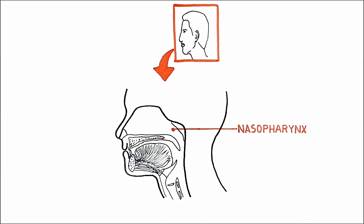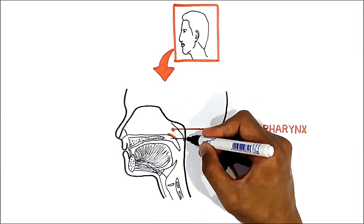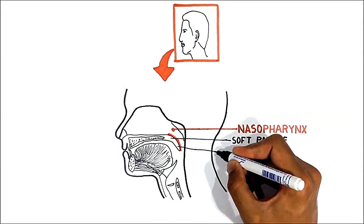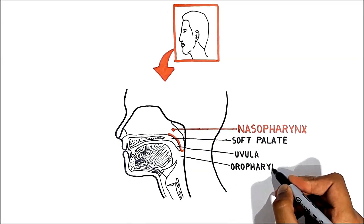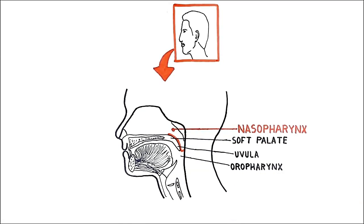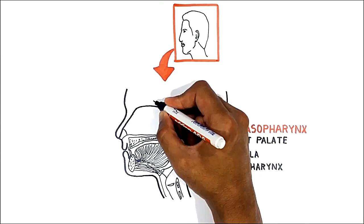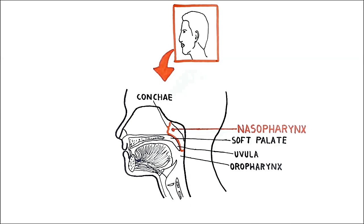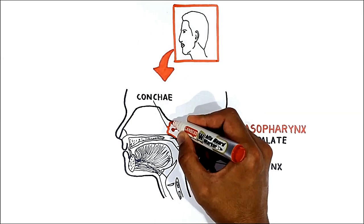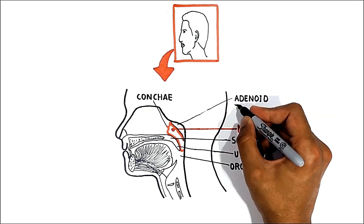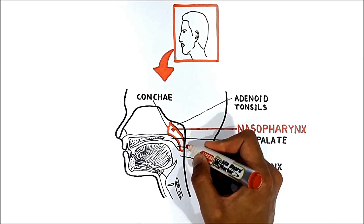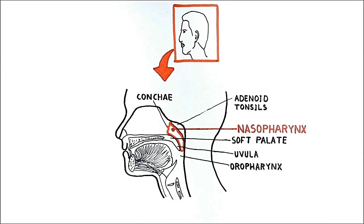Talking about the borders, the nasopharynx is bordered by the upper surface of the soft palate and extends down to the oropharynx inferiorly. The anterior aspect of the nasopharynx communicates through the choanae with the nasal cavities. Posteriorly and superiorly, it is mainly bordered by adenoid tonsils and a muscular structure covered by mucous membrane.